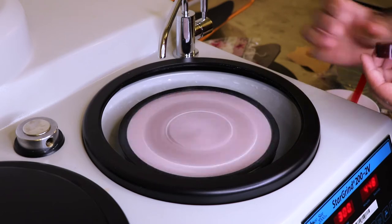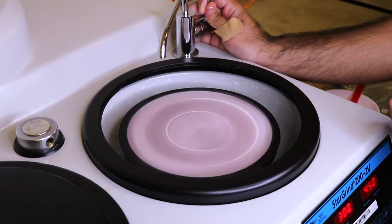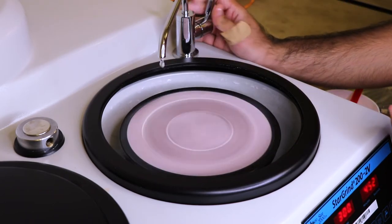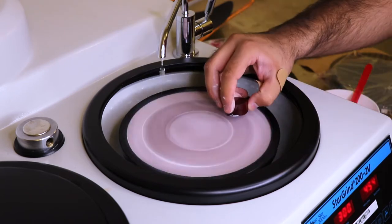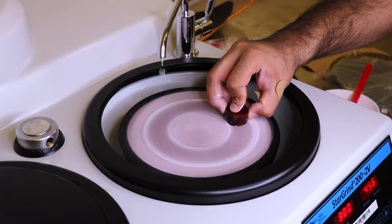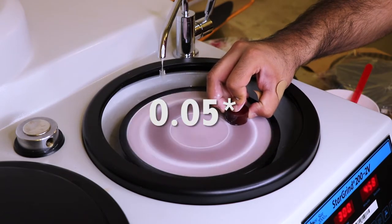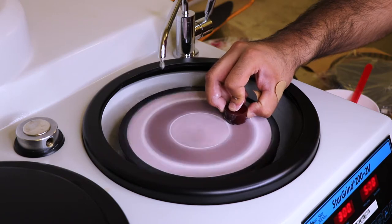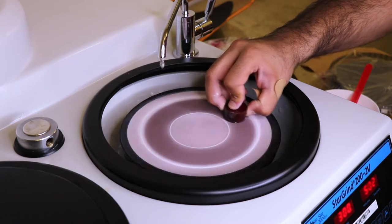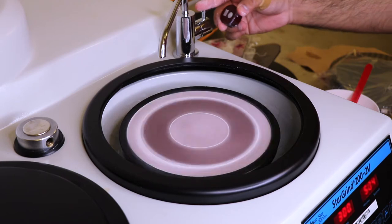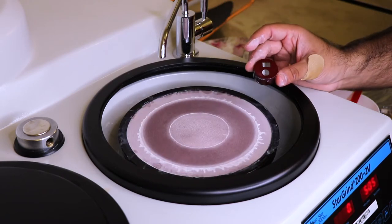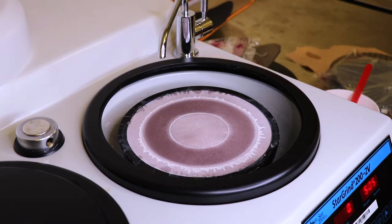Once you're happy with the results, there are two ways to move from the one micrometer powder to the 0.5 micrometer powder. You can clean the existing pad until there's no more alumina left and apply the 0.5 micrometer powder, or it's easier to have a dedicated pad for each different powder. So switch out the pad, prepare the next powder, and continue to polish your sample.